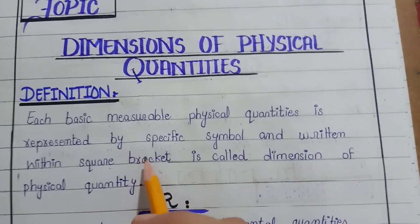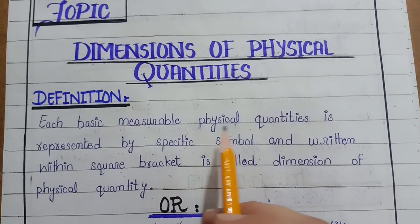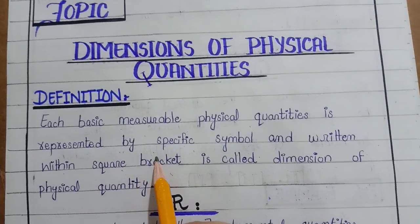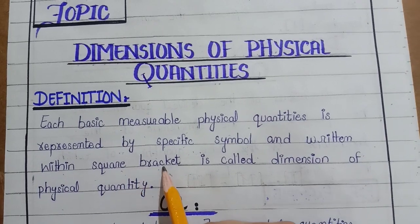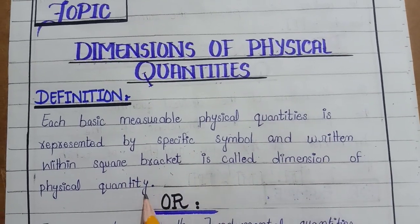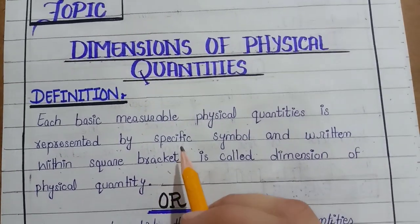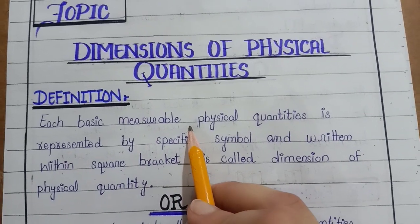Let's look at the definition. Each basic measurable quantity is represented by a specific symbol and written within a square bracket — this is called the dimensions of a physical quantity.